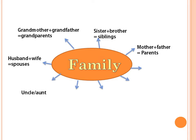Uncle, aunt. We can have a maternal uncle — الخال (al-khal) — or a paternal uncle — العم (al-'am). So 'uncle' can be العم or الخال. The same applies for aunt — maternal or paternal.